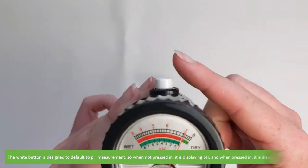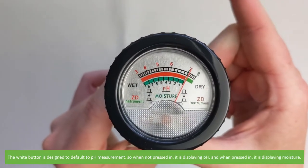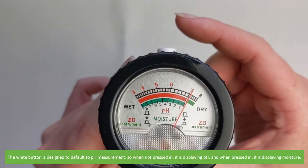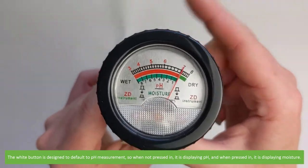The white button is designed to default to pH measurement. When not pressed in, it is displaying the pH, and when pressed in, it is displaying moisture.